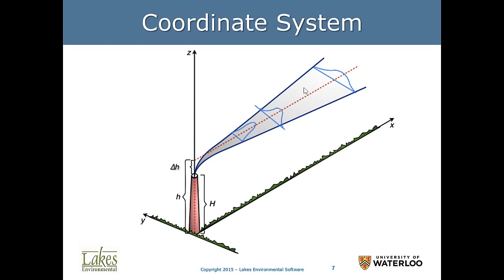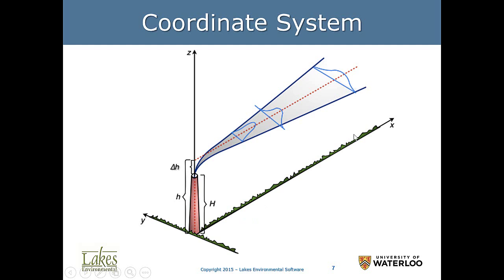When we do dispersion modeling, the x-axis changes according to wind direction. If the wind is blowing in a certain direction, that becomes the x-axis. I'm showing a stack here, but everything I present applies to mobile sources as well. Ninety degrees from the x-axis, we have the y-axis on the horizontal plane. On the vertical plane, up and down, we have the z-axis. As we emit, there is a spread of the plume on the y-axis and also a spread on the vertical direction, the z-axis.